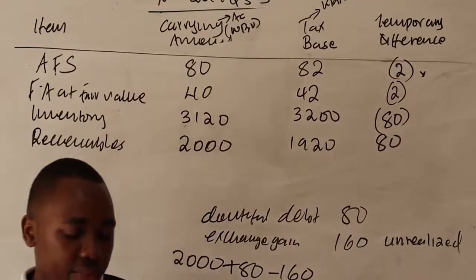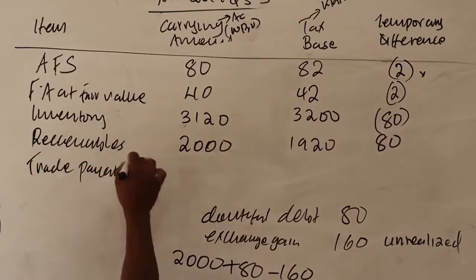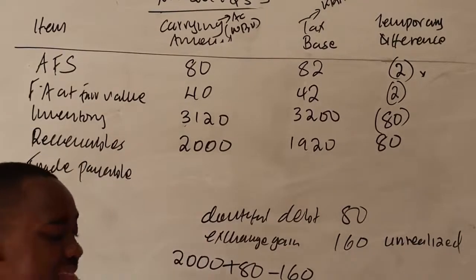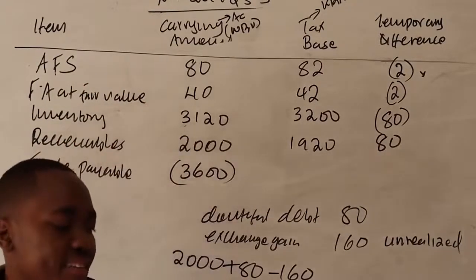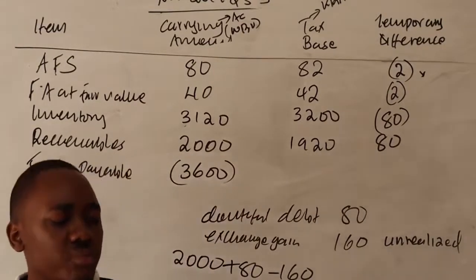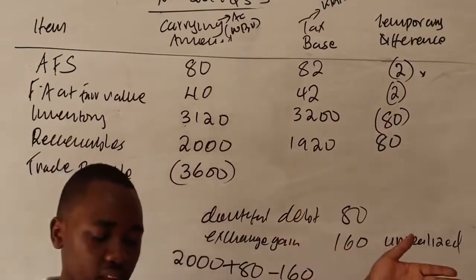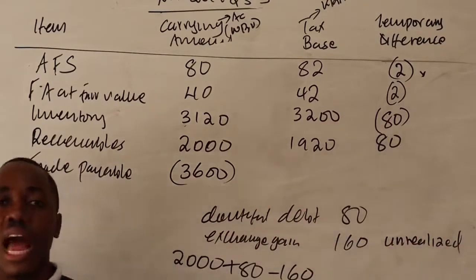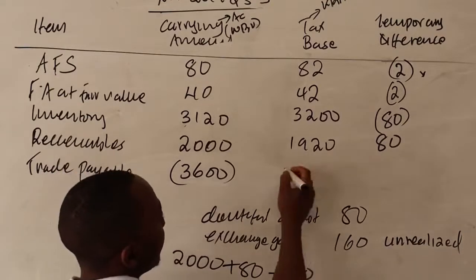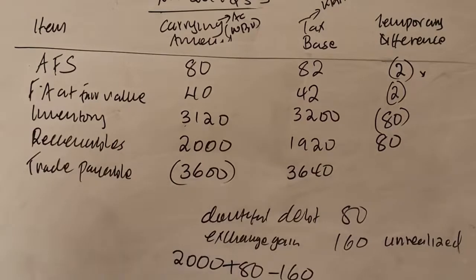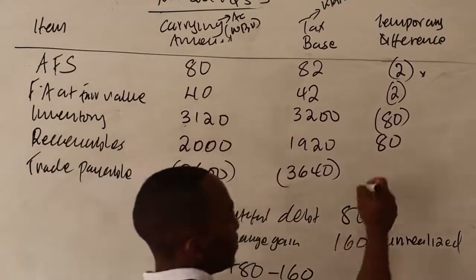Note four — trade payables. Trade payables stated at 600 million (shown as negative since it's a liability). After making a provision for discount of 40 million — since they've already made this provision, we add it back to get the tax base. Tax base = 640 million. Temporary difference: negative 600 minus negative 640 = positive 40.